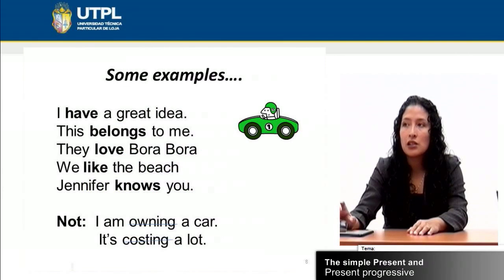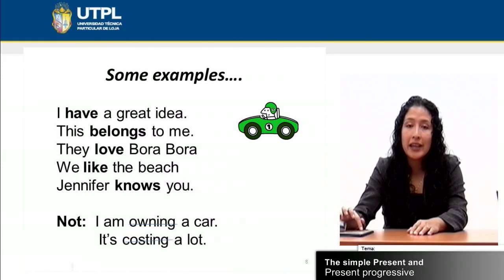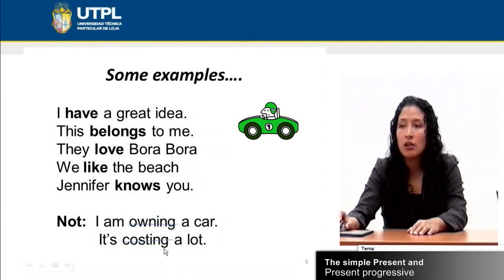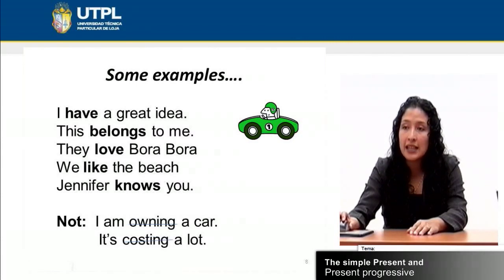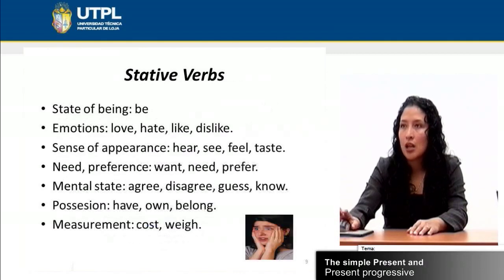Here are some examples: 'I have a great idea.' 'This belongs to me.' 'They love Bora Bora.' 'We like the beach.' 'Jennifer knows you.' It is incorrect to say 'I'm owning a car,' because 'own' is a non-action verb, or 'It's costing a lot,' since 'cost' is another non-action verb that cannot take an -ing ending. The correct forms are 'It costs a lot' and 'I own a car.'